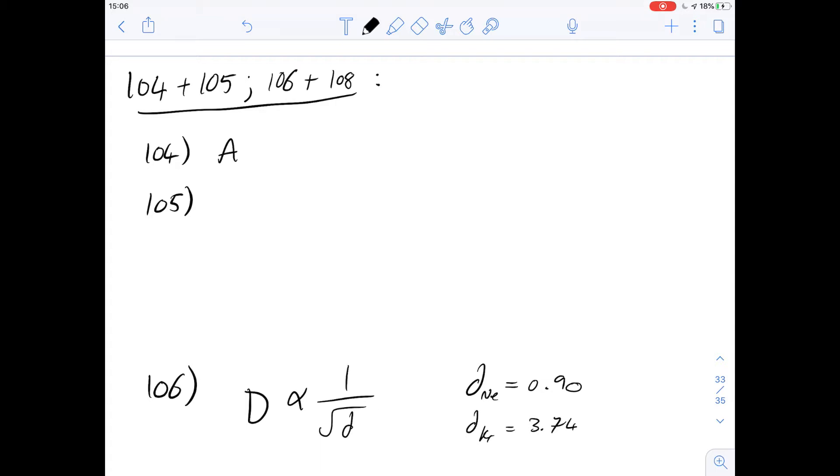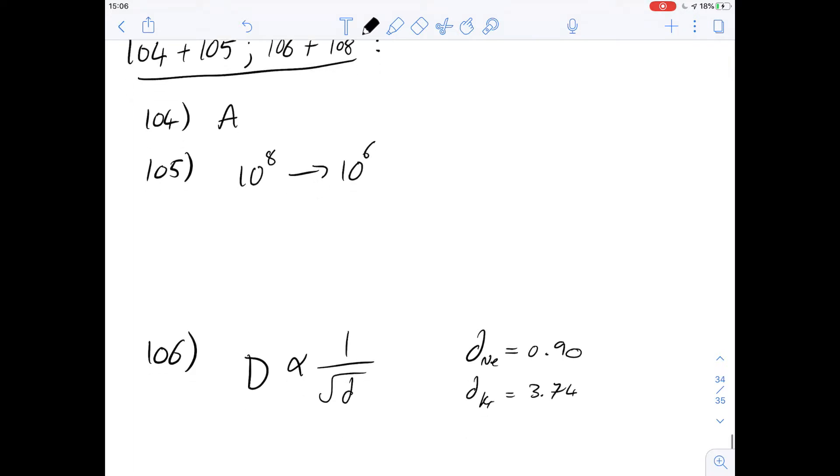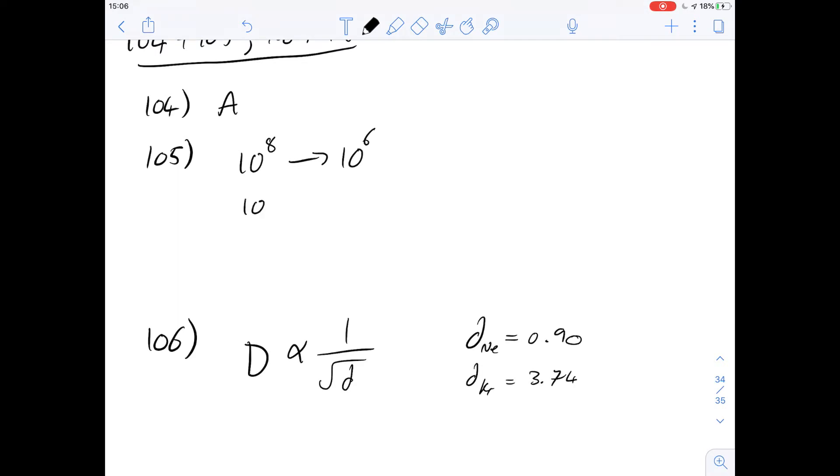105 then says which one of the following is the best estimate of the reduction in size of the normal bacterial population between drenching and day seven? So the change in population. So we're going from just over 10 to the 8 down to 10 to the 6. And 10 to the 8 is going to be 100 million and we're going down to 1 million. So that's a difference of 99 million. And so that means the best estimate for the reduction in size, the answer closest to this, is going to be 100 million or D.